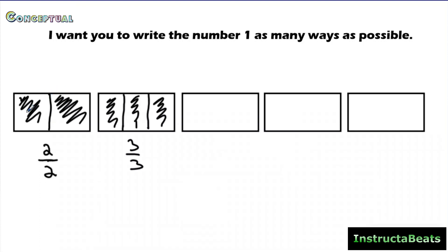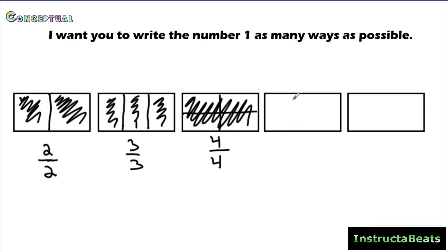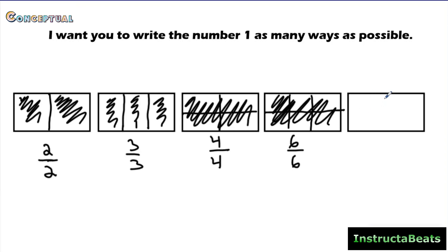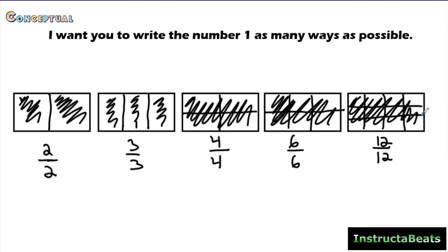If you had a brownie split into two pieces and ate two of them, and I had a brownie split into three pieces and ate three of them, we ate the same amount — we each have one whole brownie. Split into fourths: 4 out of 4. Split into sixths: 6 out of 6. Split into twelfths: 12 twelfths equals one whole. All the denominators were different because I split into different pieces, but when I ate all of them, I ate a fraction equivalent to one whole. So 2 halves equals 3 thirds equals 4 fourths equals 6 sixths equals 12 twelfths.